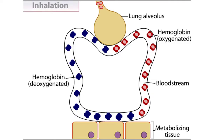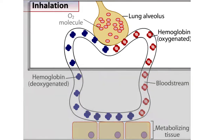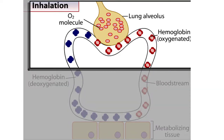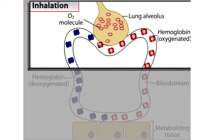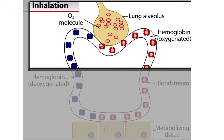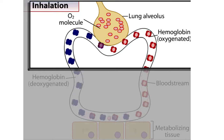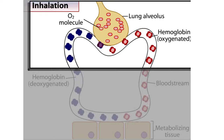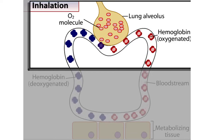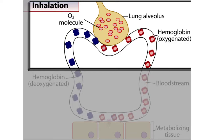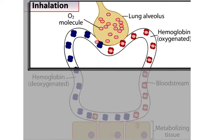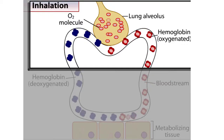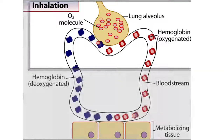Within the lungs, oxygen diffuses into the plasma of the blood and then into red blood cells, where it's grabbed by hemoglobin molecules. Carried in red blood cells, hemoglobin delivers oxygen throughout the body.